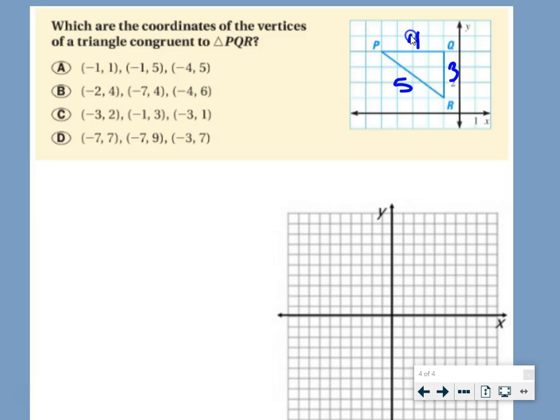let's just plot those points. Negative 1, 1. Negative 1, 5. And negative 4, 5. Right there, we have length 3, length 4. It's a right triangle, so this would be length 5. So, right there, we have the coordinates of a triangle congruent to PQR.